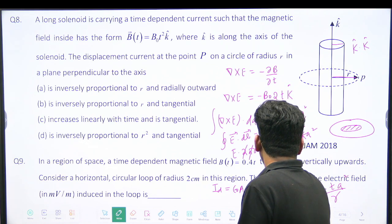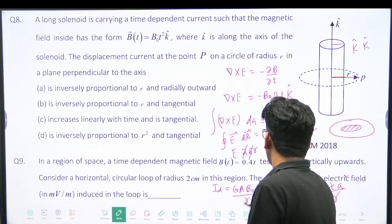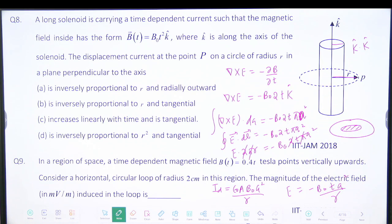Epsilon naught, B₀, A squared, A squared by R. So displacement current will also be effectively flowing inside the solenoid. The corresponding displacement current.